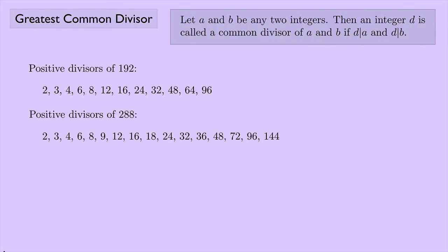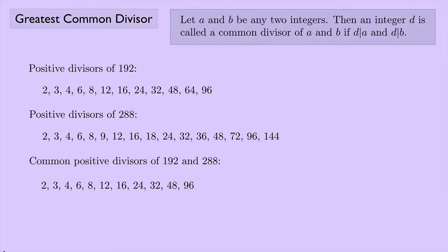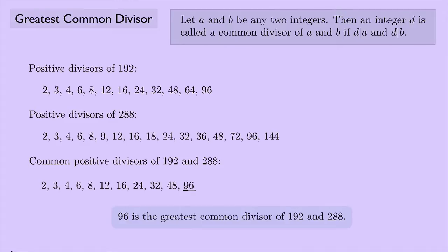If we look at the common positive divisors of 192 and 288, here they are. And we see that we have one value here, 96. That's the largest common divisor between 192 and 288. So this 96 here is called the greatest common divisor of 192 and 288.